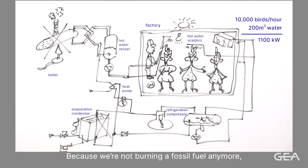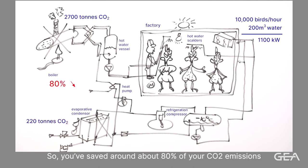But not only that, because we're not burning a fossil fuel anymore, to generate the 1,100 kilowatts would mean we would generate around about 2,700 tons of CO2. Now we're only using 80 kilowatts of electricity through a grid which is becoming ever more green because we've all got wind farms in the countryside generating low-carbon electricity. Then the CO2 emissions go down to about 200, 220 tons of CO2. So you've saved around about 80% of your CO2 emissions simply recovering the heat that you put into the bird in the first place.